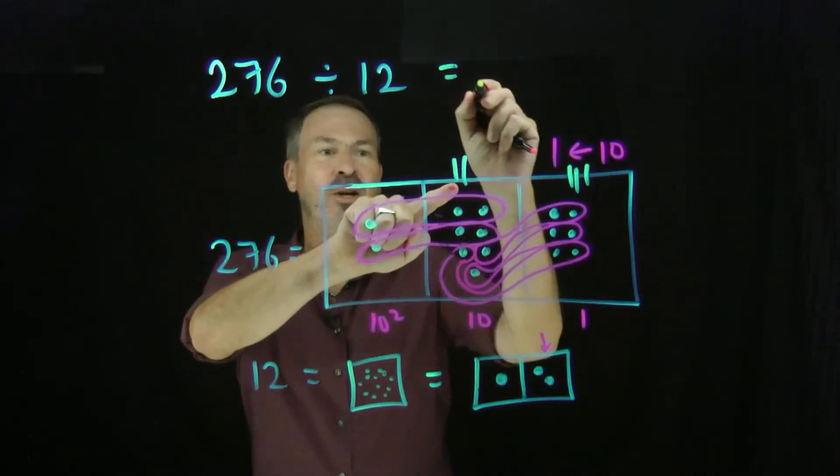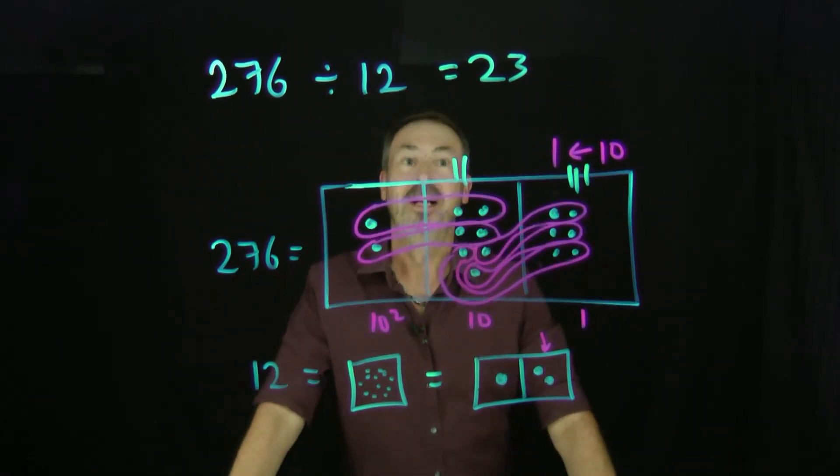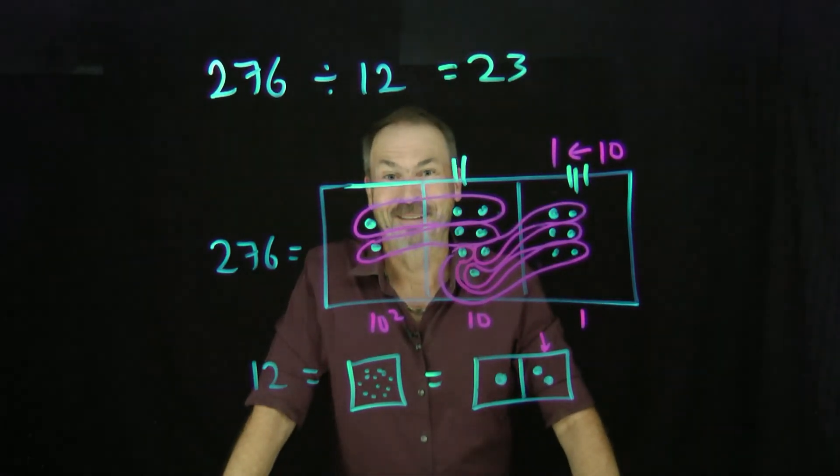I see the answer is two groups of 12 at the tens level and three groups of 12 at the ones level. The answer must be 23. Awesome.